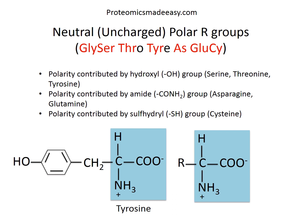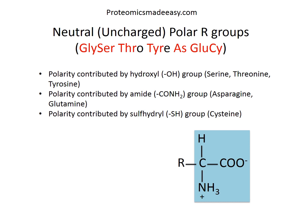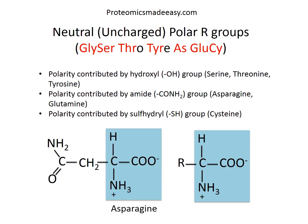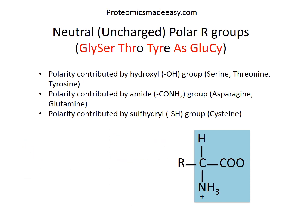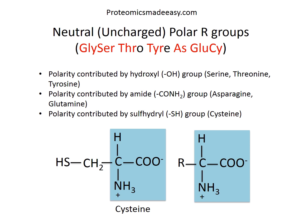Asparagine: the polarity is contributed by the CONH2 group, so the structure is CH2-CONH2. Glutamine has one additional CH2, giving the R group CH2-CH2-CONH2. Cysteine has a sulfhydryl group, so the structure is CH2SH. If you remember the phrase 'Glycer, Throat, Tire, As Glu C' and the functional groups contributing polarity for each amino acid, it becomes easy to remember the structure of this entire group.